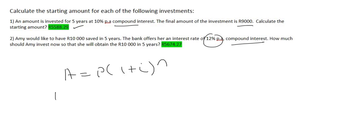We know that Amy would like to have 10,000 Rand, so that's the final amount. We don't know how much she's going to start with, so we'll leave it as P. The interest rate is 12%, or 0.12, and it's a 5-year period.